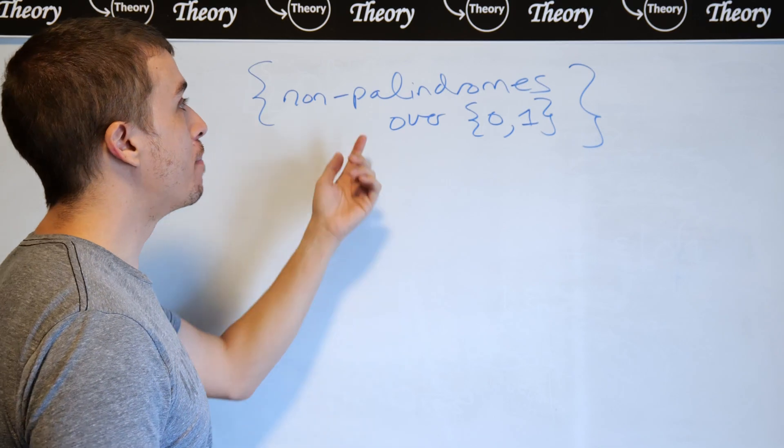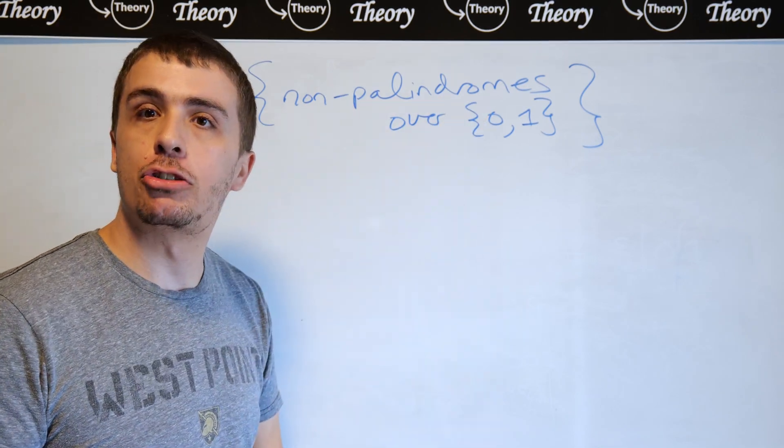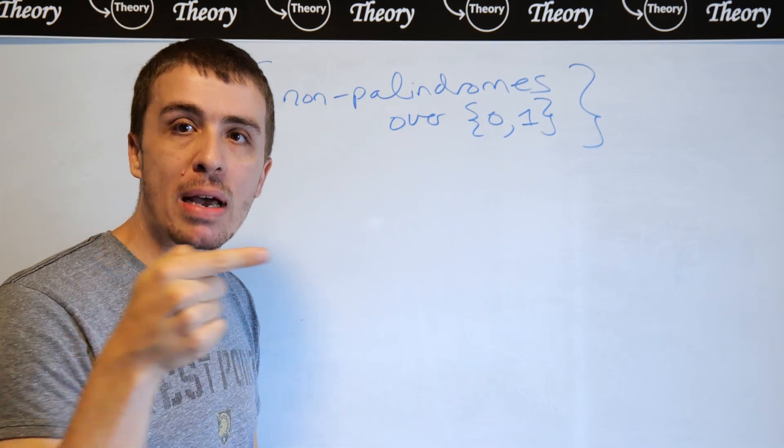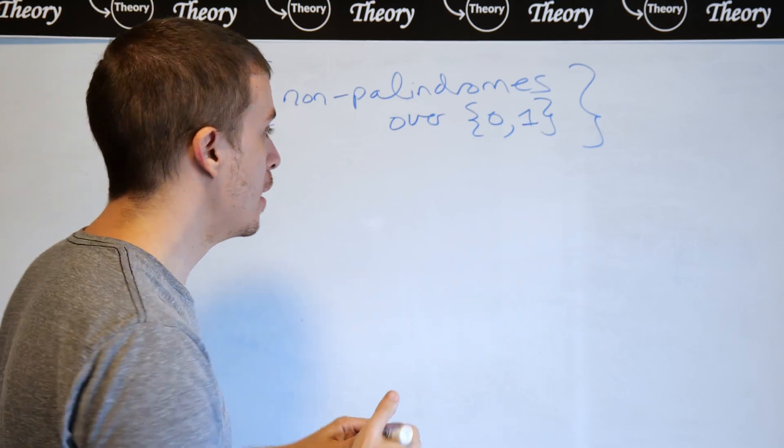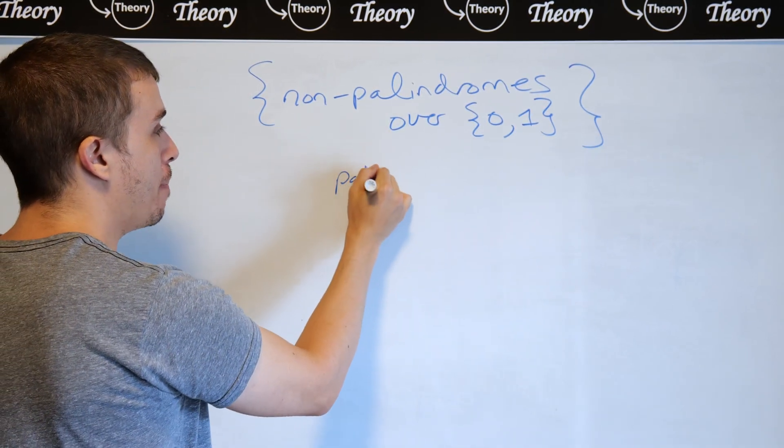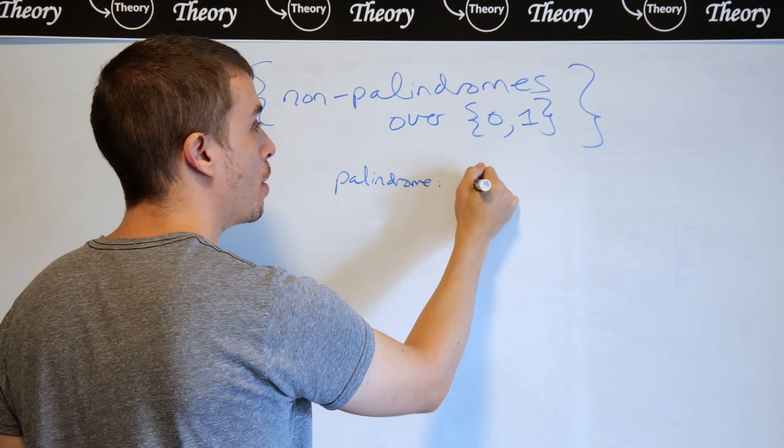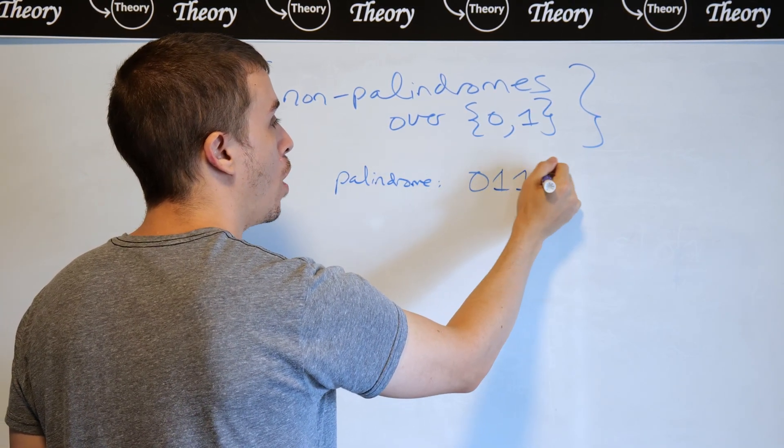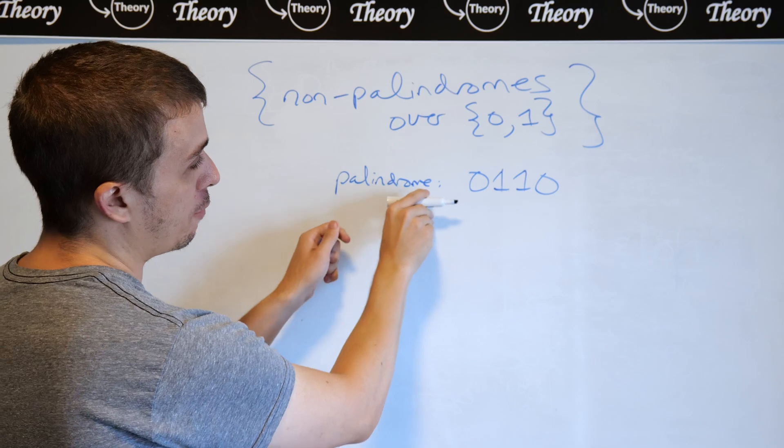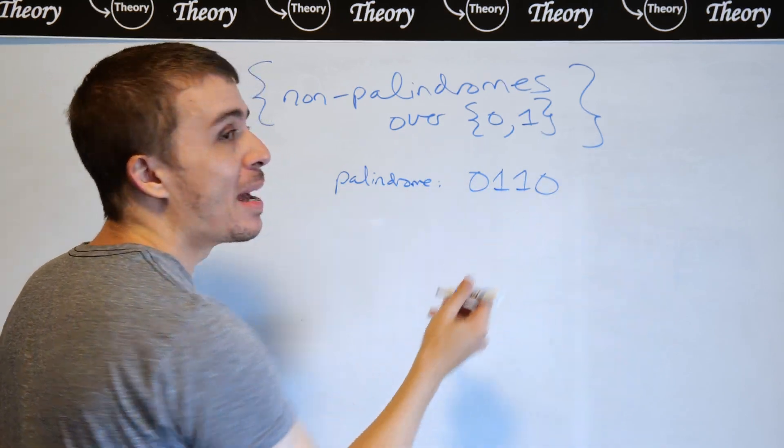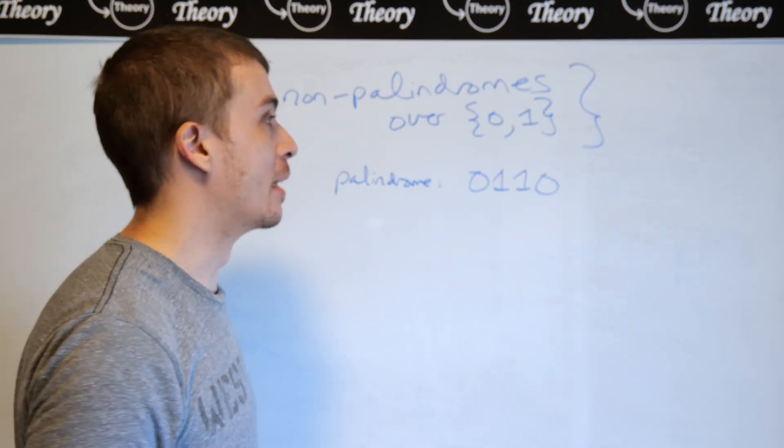So if you don't remember, a palindrome is a string that is exactly the same when read one way and the other way. So as an example, a palindrome over 0 and 1 could in principle be 0, 1, 1, 0. So if we read it going forward and going backward, it's identically the same string.